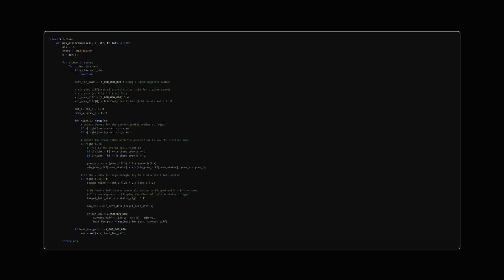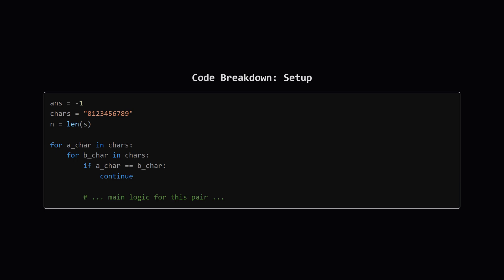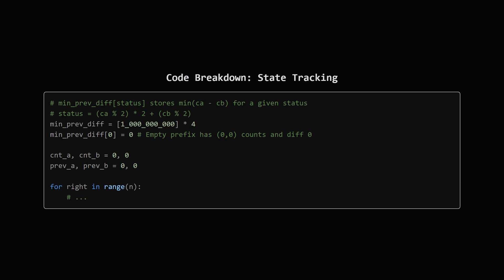All right, here's the complete Python code that implements this idea. I know it might look like a lot at first, but don't worry. We're going to walk through the key pieces step by step, so it all makes sense. First, the setup. We start our answer at negative 1, which is what we'll return if we never find a valid substring. Then, we set up two loops to iterate through every possible distinct pair of characters, A and B. The core logic will run inside these loops, once for each pair.